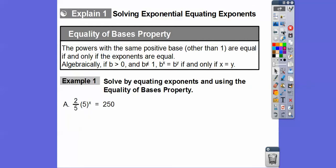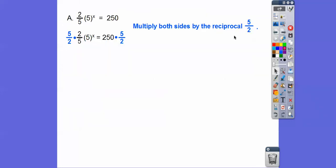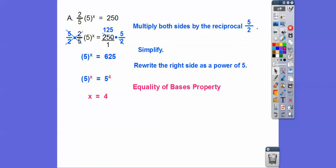All right, so let's solve by equating the exponents and using the equality of bases. So on this one here, let's slide it up here. We're going to multiply both sides by the reciprocal of this fraction. 2 over 5 is 5 over 2. And then the 5s cancel, the 2s cancel. And then 2 goes into 250, 125 times. 125 times this 5 is 625.